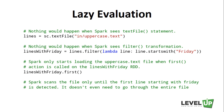Instead, Spark would delay the computation. After it sees the whole chain of transformations, it would compute the data which is needed for the result. In our case, Spark only starts calculating the result when we call the first action. In fact, what happens under the hood is that Spark scans the file only until the first line starting with Friday is detected. It doesn't even need to go through the entire file.